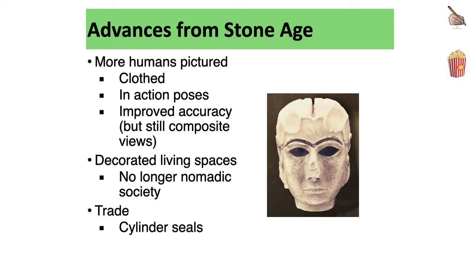Let's look at some advances from the Stone Age. More humans are going to be depicted, and they're going to be wearing clothes, which gives us more information about their customs and social class. They'll be seen in action poses and with improved accuracy, but we'll still see the composite views. There'll be decorated living spaces, and people are staying in one place for longer periods of time. Trade will take place, and we'll see that through the example of cylinder seals.